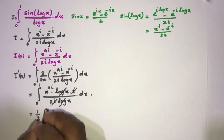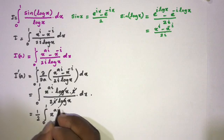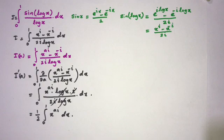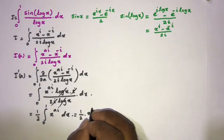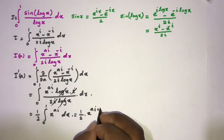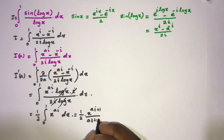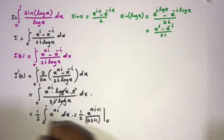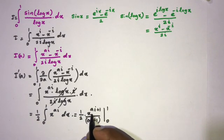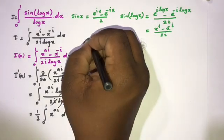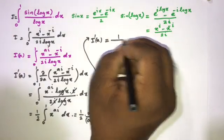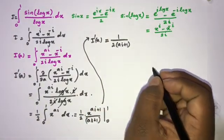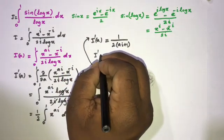The i cancels and the natural log of x cancels, leaving 1 over 2. So 1 over 2 is a constant and we can write I'(a) equals 1 over 2 times the integral from 0 to 1 of x to the ai dx. This equals 1 over 2 times x to the ai plus 1 over ai plus 1, evaluated from 0 to 1. Plugging in 1 gives 1 over ai plus 1, and plugging in 0 gives 0. So I'(a) equals 1 over 2 times (ai plus 1).